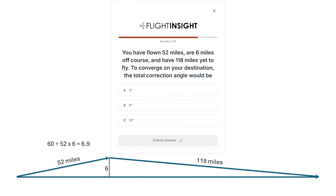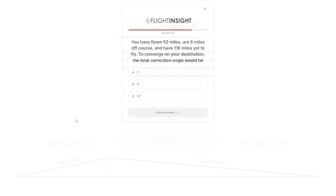This is only half the battle. If we correct 6.9 degrees we'll be parallel to our course, but we won't be reconverging with it in time to reach our destination — we need to correct further. Using the 1-in-60 rule again: 60 divided by 118, then multiply by 6, gives us 3.1 degrees of further correction needed. Taking these together, we get a total course correction of 10 degrees.